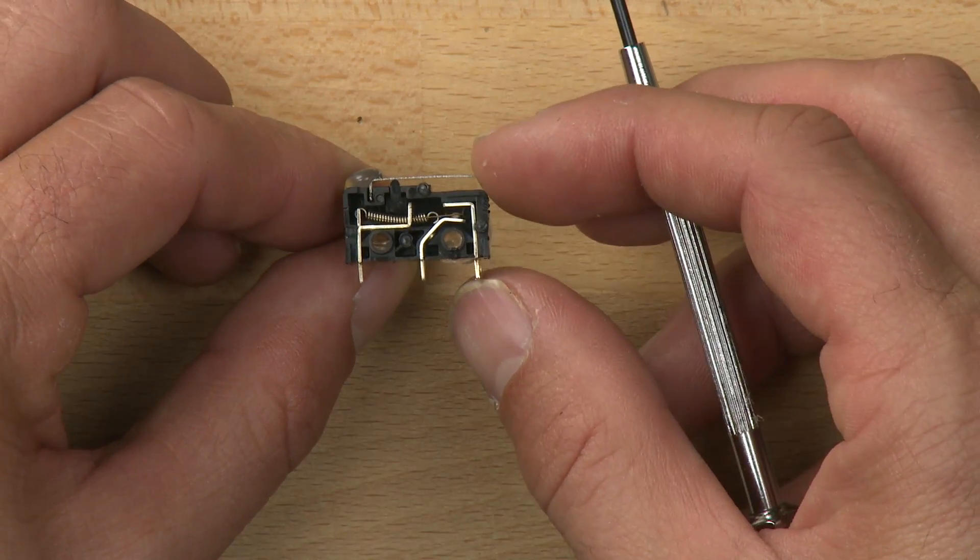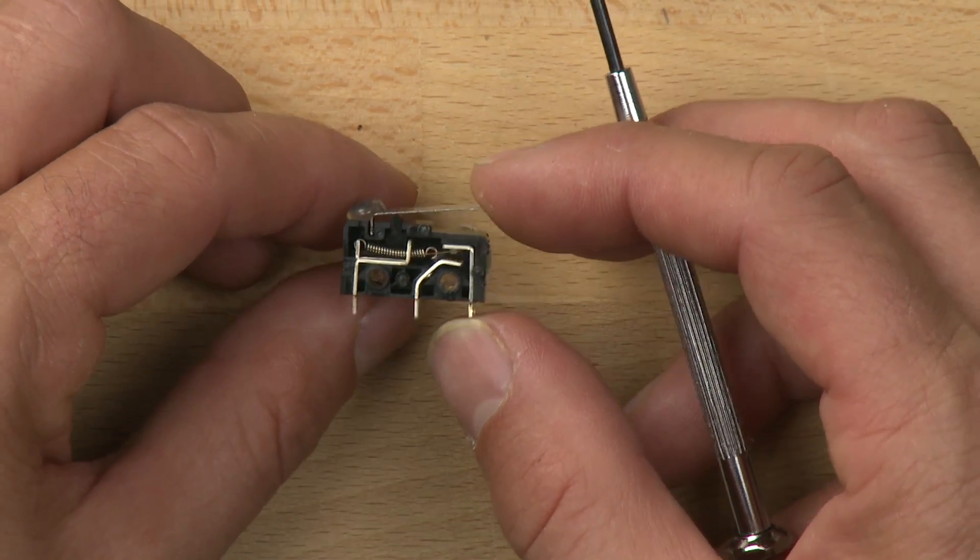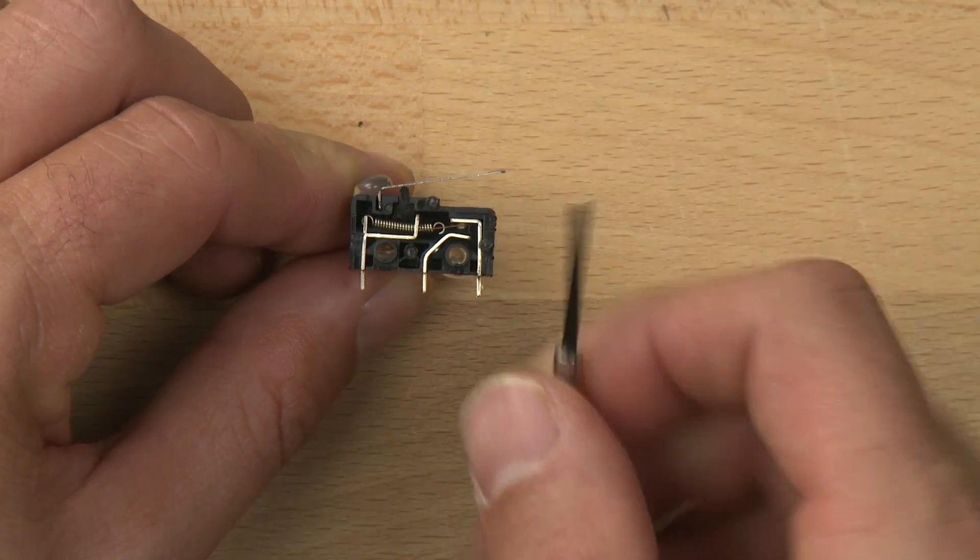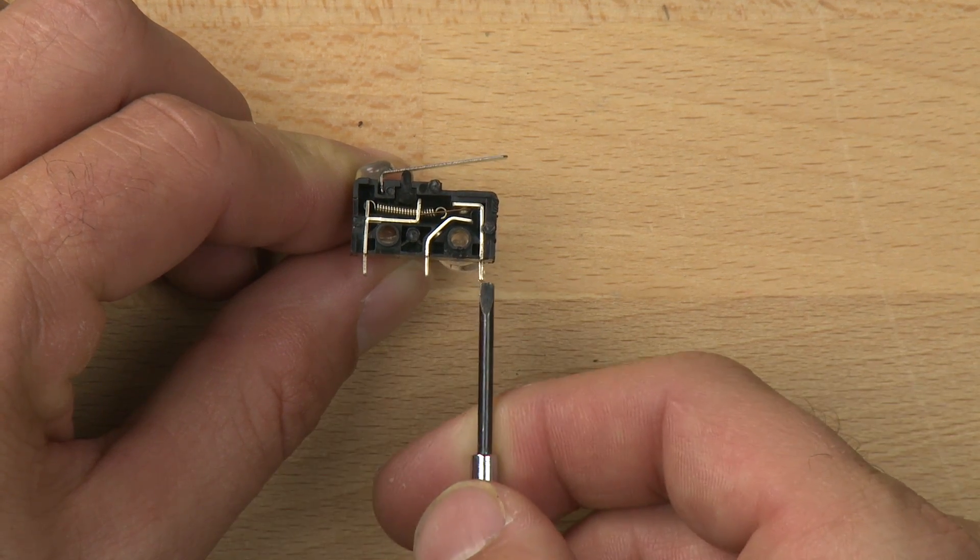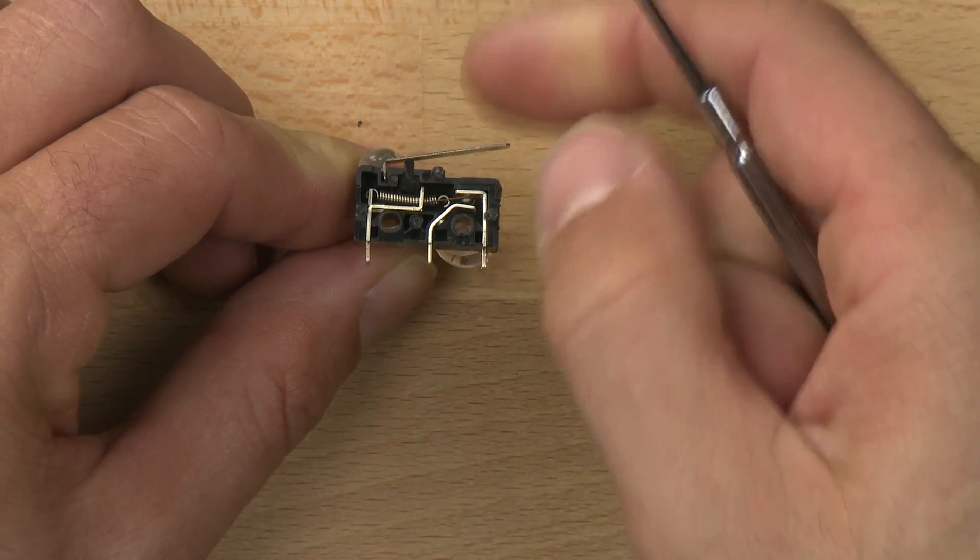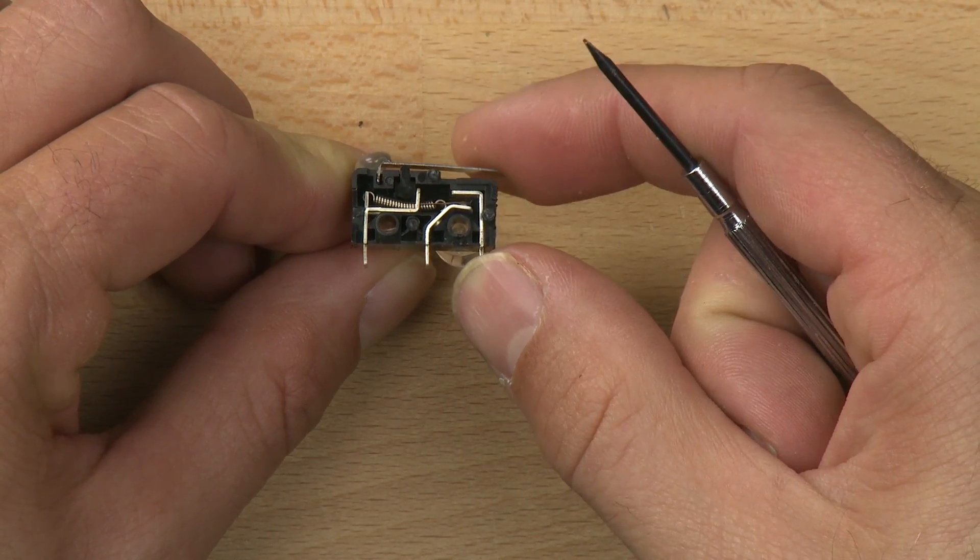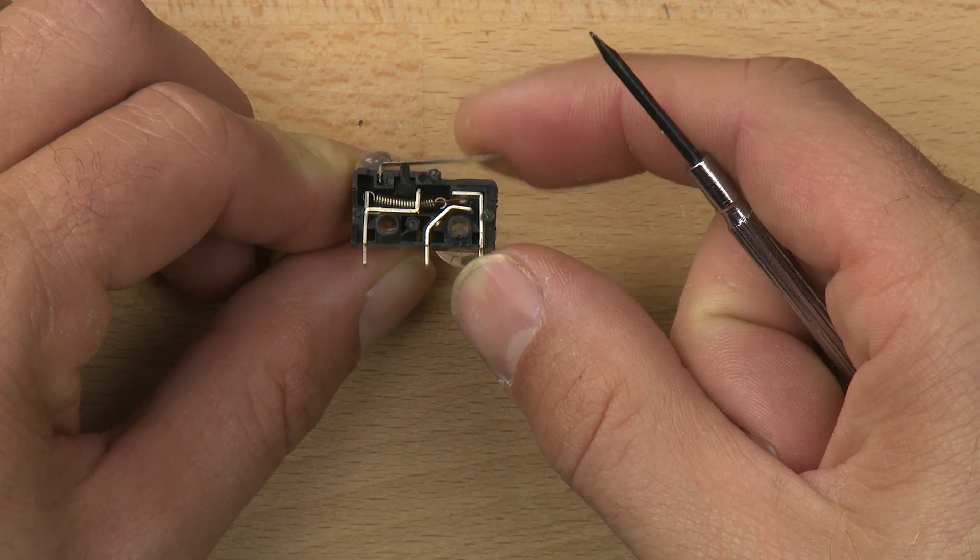The switch is basically opening and closing the circuit between this side and this side and then between this side and this side. If you watch carefully, you can see that little copper contact shifting up and down.